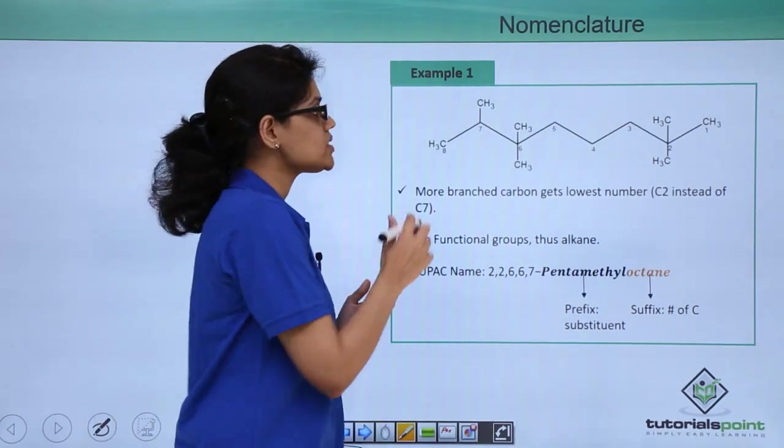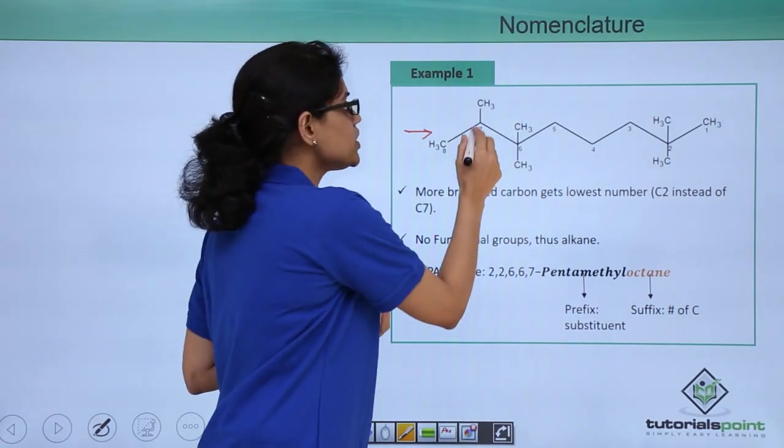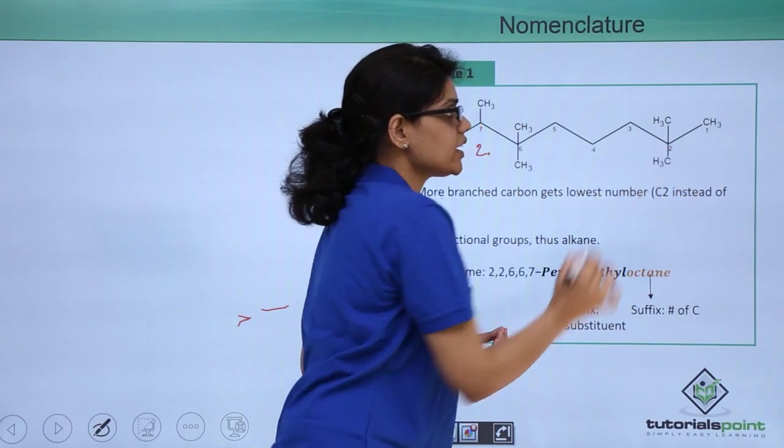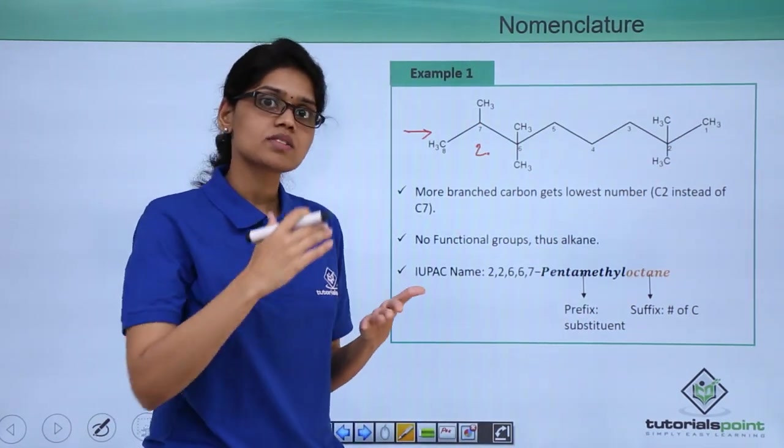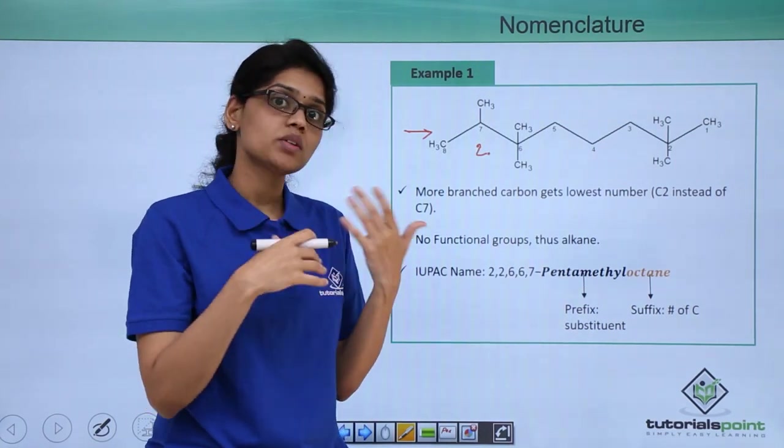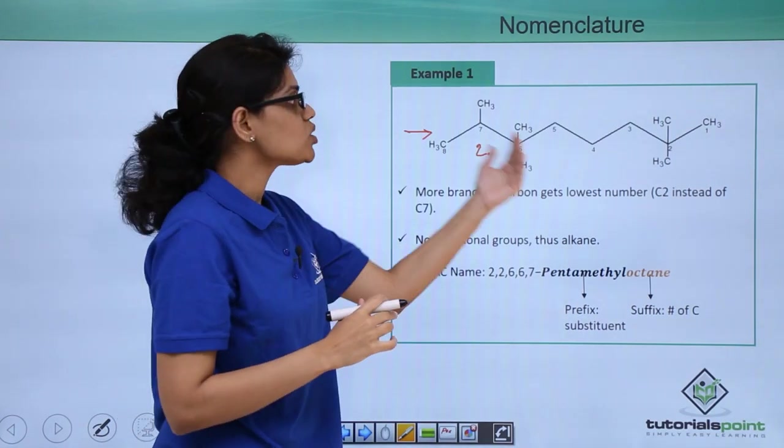The third important thing to remember is how to do the numbering. We can see that there are two ways of numbering. If you number from this side the first branching occurs at C2 position, and if you number from this side again the branching occurs at 2 position. Now we have a confusion because at both the 2 positions we are having a branching and according to the previous rule both of them are getting the lowest number. Now what should be the preference?